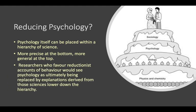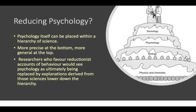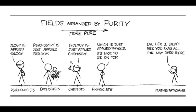Researchers who favour reductionist accounts of behavior would see psychology as ultimately being replaced by explanations derived from those sciences lower in the hierarchy. So in terms of OCD, the behavior can be explained through biology, which can then be explained through chemistry.